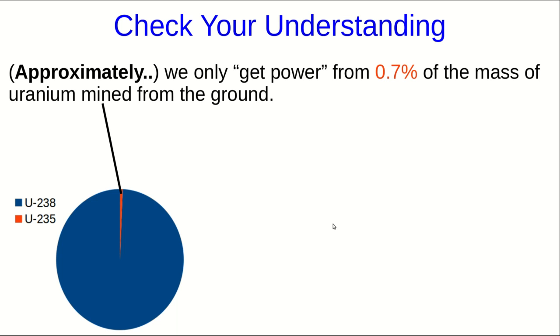So to a reasonable approximation, we only get power from the fissile portion of the uranium that we dig out of the ground, about 0.7% of the mass. Now, this is approximate. A small fraction of the power in a nuclear reactor does come from the fission of U238. However, as a rough approximation, we can basically say that it's the U235 that matters.